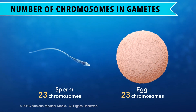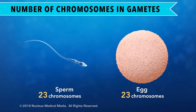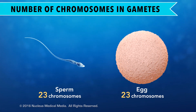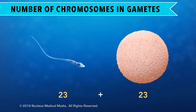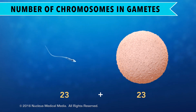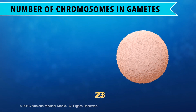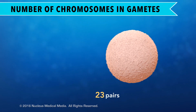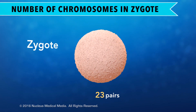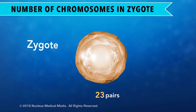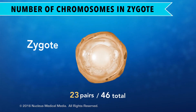And, unlike somatic cells, gametes are not genetically identical to their parent cells. When a sperm cell fertilizes an egg, they both contribute their 23 chromosomes. This fused cell, called a zygote, now has 23 pairs of chromosomes, for a total of 46.